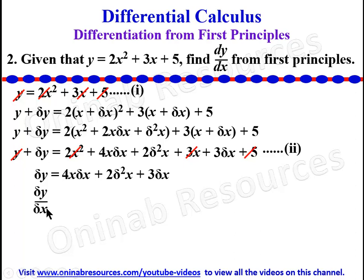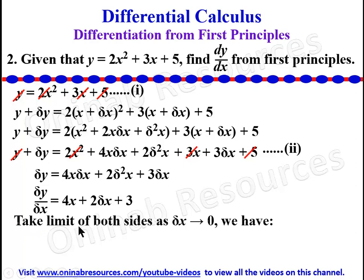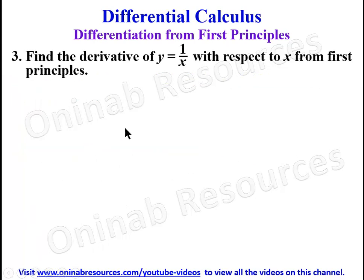Dividing through by delta x we have delta y / delta x = 4x + 2·delta x + 3. Now we take the limit of both sides as delta x approaches 0. We have dy/dx = 4x + 0 + 3. So dy/dx = 4x + 3. This is the derivative of the function from first principles.